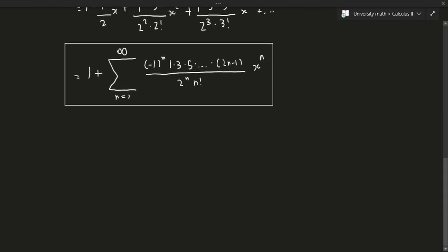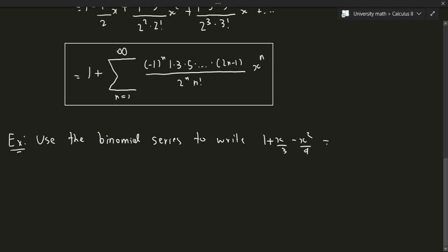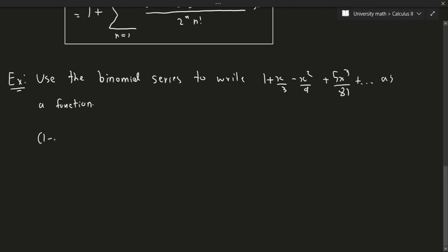Now for the final example: use the binomial series to write 1 + x/3 - x²/9 + 5x³/81 + ... as a function. We use the fact that (1+x)^k = 1 + kx + k(k-1)/2! · x² + k(k-1)(k-2)/3! · x³ + ...